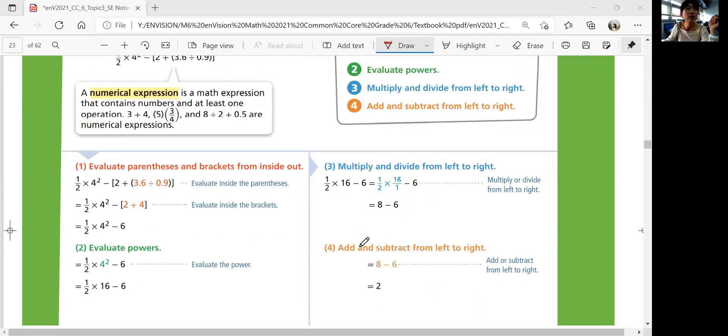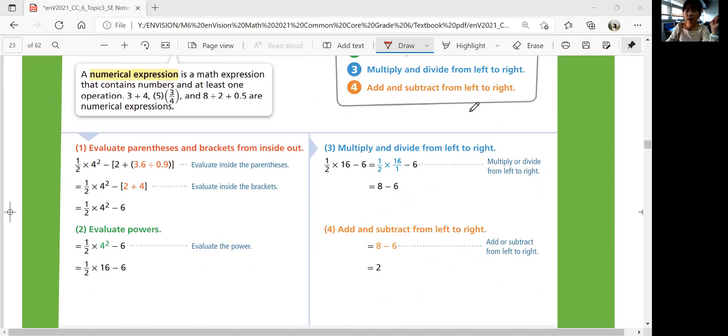So first, let's solve parentheses and brackets from inside out. You're going to solve 3.6 plus 0.9 first. That's 4.5. So then you still have a bracket. 2 plus 4.5 is next. And then you have 6.5. And subtracting 6.